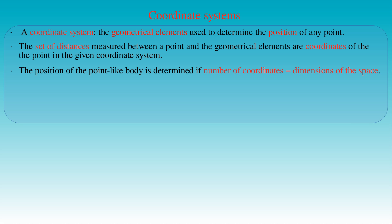When we study motion along a line, it is enough to apply a one-dimensional coordinate system. Such a coordinate system consists of a reference point O called the origin, and a line with orientation called the x-axis, both located on the path of motion. One coordinate, called the x-coordinate, is enough to determine the position of a moving body along the line — it is the distance between the position of the body and the origin O.